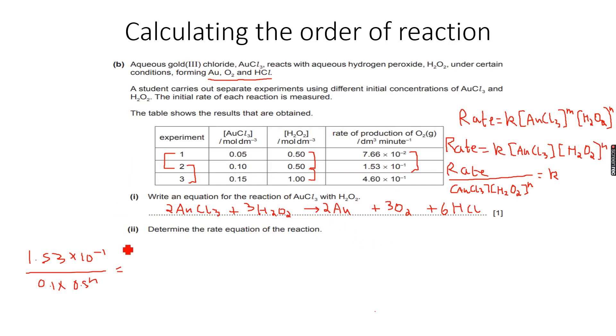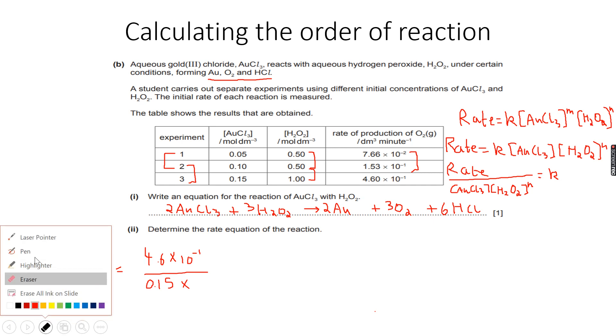We can equate this to its counterpart in experiment 3, which is 4.6 times 10 to the power of minus 1 over 0.15 to the power of 1, because m is equal to 1. So 0.5 to the power of 1 times 1 to the power of n.